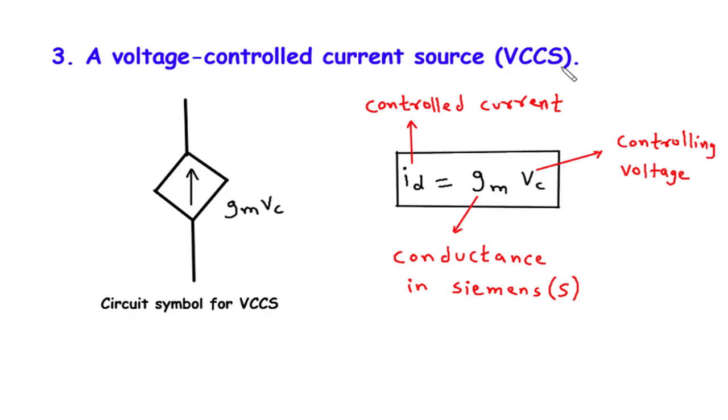To summarize, a voltage-controlled current source (VCCS) is an electronic component that produces a current proportional to the voltage applied to it. The current is controlled by adjusting the controlling voltage using the equation ID equals GM into VC, where GM represents the conductance in Siemens (S). This relationship allows us to modulate current flow in electronic circuits and find applications in amplifiers, signal processing, and control systems.